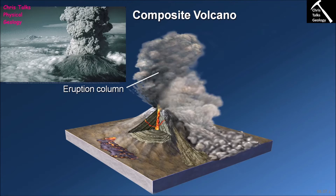Within the eruption column we also have ash particles — very small pieces of lava thrown up into the air. As they move through the air they begin to solidify: sometimes fully, sometimes partially, becoming semi-solid, like play-doh or silly putty. The final component of the eruption column is superheated gas — a large amount of volatiles being released that are very, very hot.